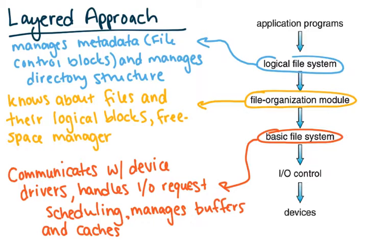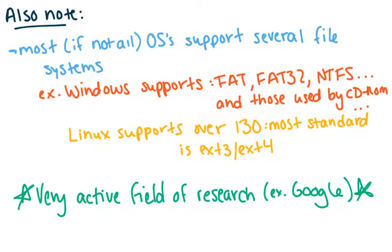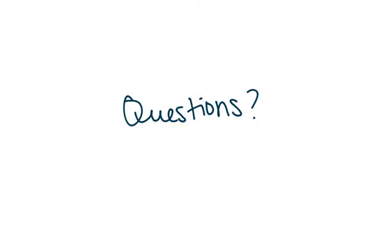Most OSes support several different file systems. For example, Windows supports FAT32 and NTFS, as well as those used by CD-ROMs and DVDs. Linux supports over 130 different file system types — the most standard are ext3 and ext4. This is a really active field of research, as we want to find the most efficient and fastest possible file system structure.